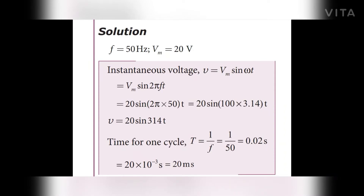The given data: frequency f is equal to 50 Hz, and peak value Vm is equal to 20 V. The instantaneous voltage is V = Vm sin(ωt), and since ω = 2πf, we substitute to get V = Vm sin(2πft). Substituting values: V = 20 sin(2π × 50 × t), giving the final equation V = 20 sin(314t).